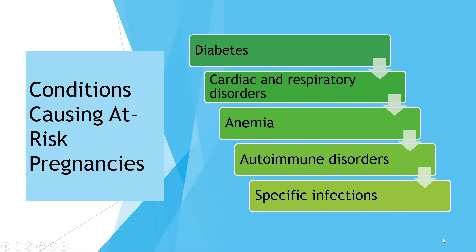Conditions that cause at-risk pregnancies include diabetes — both pre-existing and gestational — as well as cardiac problems and respiratory disorders, which are exacerbated by pregnancy. Existing anemia becomes worse due to the increased blood volume of pregnancy, creating concerns about added bleeding risk and reduced oxygen-carrying capacity. Autoimmune disorders definitely increase pregnancy risk, as do some specific infections, which we'll go over later in the lecture.